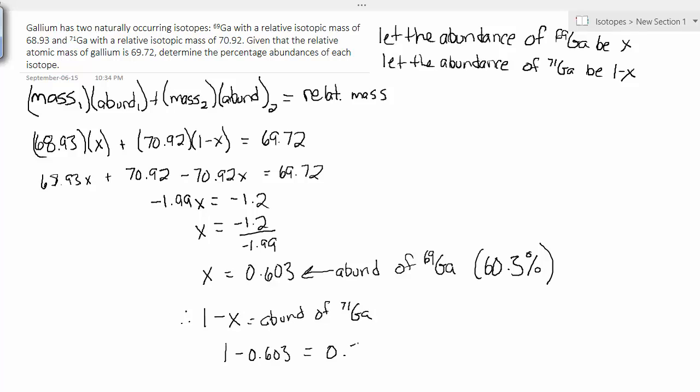All right, so in terms of our course, unless you're given some additional piece of information, you're only ever expected to do this for two abundances, so two isotopes. All right, so good times.